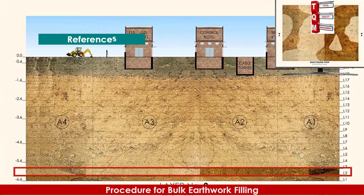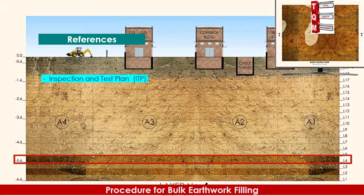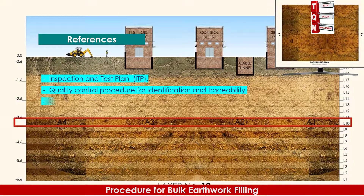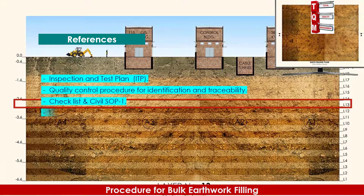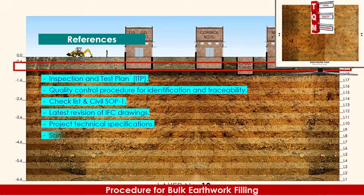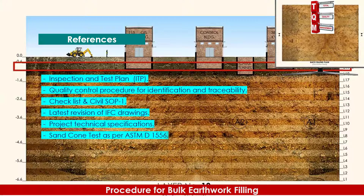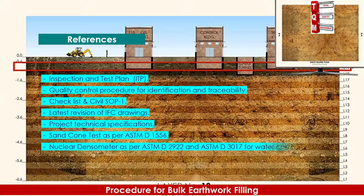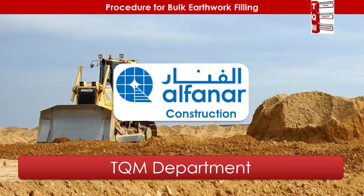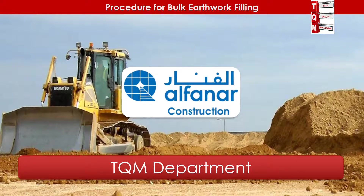The following documents may be referred to regarding this activity: Inspection and Test Plan (ITP), quality control procedure for identification and traceability, checklist and civil SOP1, latest revision of IFC drawings, project technical specifications, sand cone test as per ASTM D-1556, nuclear densimeter as per ASTM D-2922 and ASTM D-3017 for water content, soil classification according to ASTM D-2487, and field density according to ASTM D-1556 or D-2167. Thank you for watching. We hope this work methodology will be useful on site.